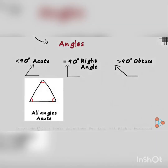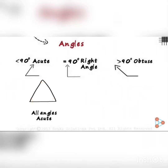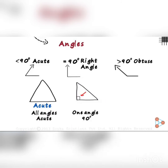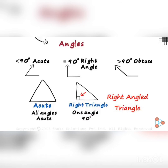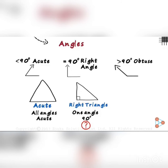Now see this triangle — all the angles are acute, meaning less than 90 degrees, so this is an acute angle triangle. A right angle triangle means one angle is 90 degrees. It is very clear that one angle is 90 degrees, so this is the right angle triangle.